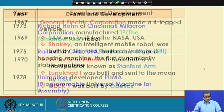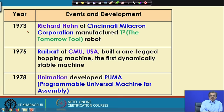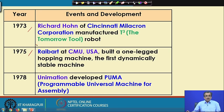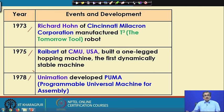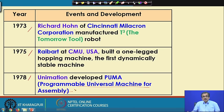In the year 1973, Richard Hohn of Cincinnati Milacron Corporation manufactured one robot — the name of the robot was T3, the Tomorrow Tool. In 1975, Raibert at Carnegie Mellon University, USA, built one one-legged hopping machine. That is the first dynamically stable machine, and Raibert is known as the father of multi-legged robots. In 1978, Unimation — the first robotics company — developed the Puma, that is, the Programmable Universal Machine for Assembly. The current version of Puma has six degrees of freedom and is very frequently used in various industries.